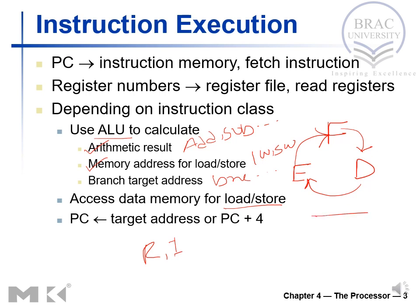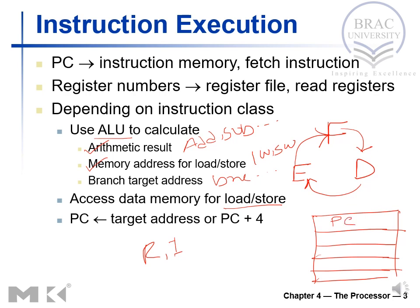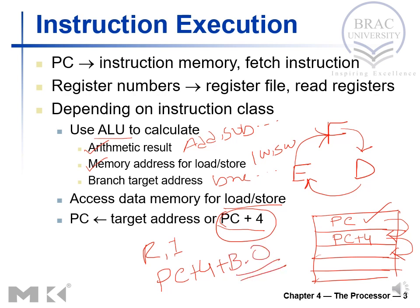For sequential execution, if these are 32-bit memory locations and the current address is PC, the next address would be PC+4. Once the instruction at the current address is executed, the next instruction is fetched from PC+4, and so on — PC is incremented by 4 each time. If there is any branching, then PC+4 is not the next instruction's address; instead we need PC+4 plus a branch offset, where the branch offset is sign-extended to 32 bits.